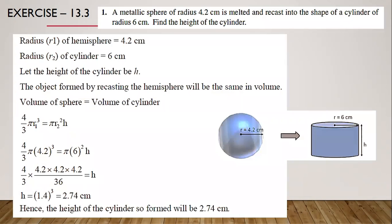Exercise 13.3, first one: a metallic sphere of radius 4.2 centimeter is melted and recast into the shape of a cylinder of radius 6 centimeter. Find the height of the cylinder. Here, a sphere is converted into a cylinder. Whenever we have conversions from one shape to another, volume is going to be the same — we are not adding any extra material. So volume will always be the same. With that concept, we'll find whatever is asked.